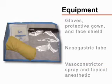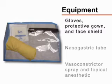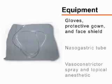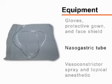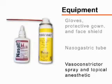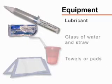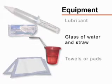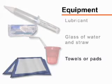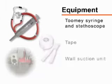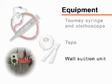Begin by gathering the equipment you will need. This will include gloves, a protective gown, and face shield, an appropriately sized nasogastric tube, vasoconstrictor spray, and a topical anesthetic such as benzocaine or lidocaine solution with an atomizer. Obtain a lubricant, a glass of water with a straw, towels or blue pads, a 60cc catheter tip Tumi syringe, a stethoscope for tube confirmation, tape, and a wall suction setup.